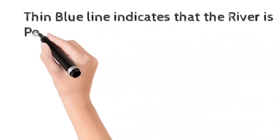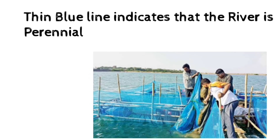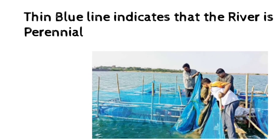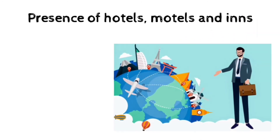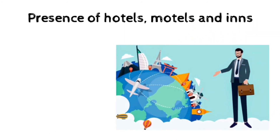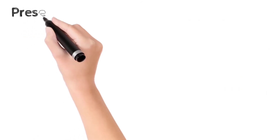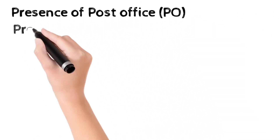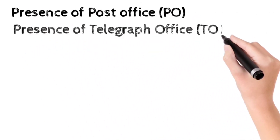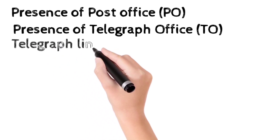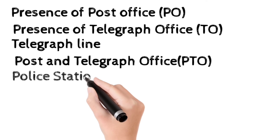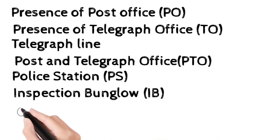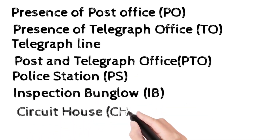Presence of perennial sources of water like rivers indicates fishing as an occupation apart from farming. Presence of hotels, motels, inns and dhabas indicate that people are engaged in the tourism industry. Finally, conventional signs like IB for inspection bungalow, PO for post office, PTO for post telegraph office, railways, police stations, etc., show that people are also engaged in government or public services.